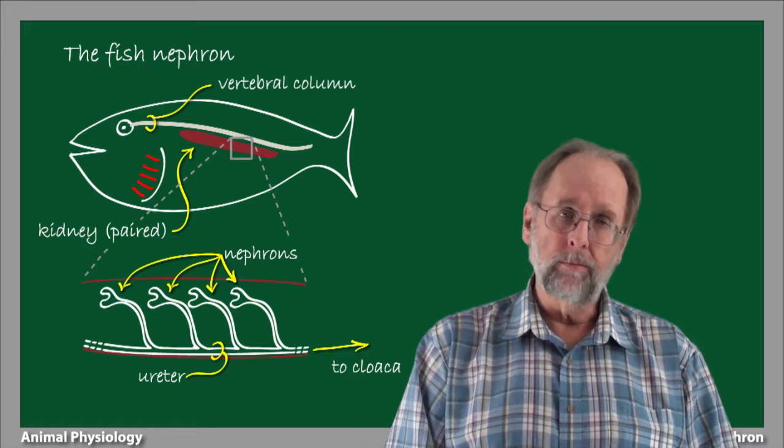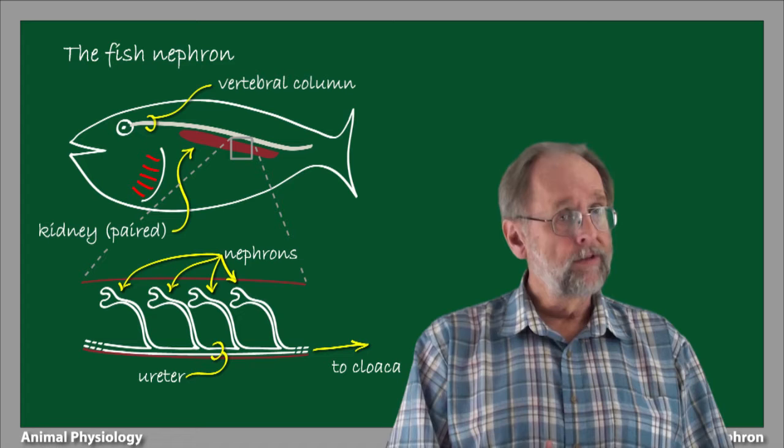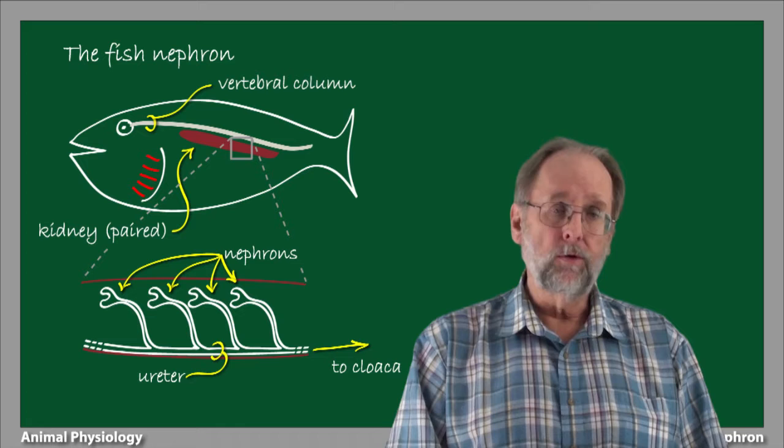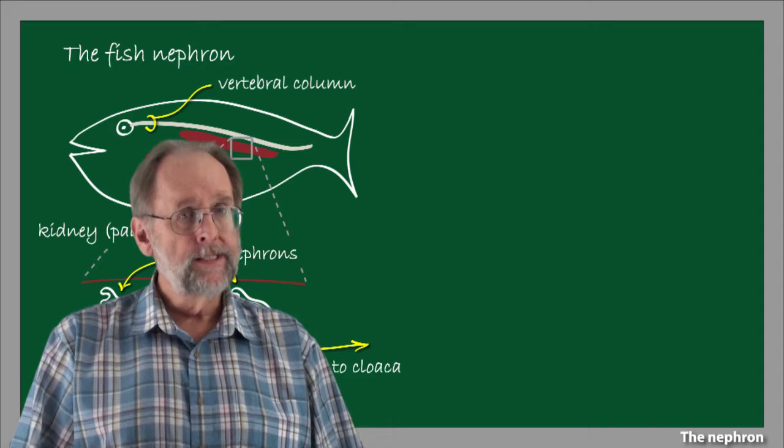There's one important feature of the nephron that's important to understand before we get into its more detailed structure and function, namely that the inside of the tubular nephron is a space that's actually contiguous with the outside environment. The array of nephrons in a kidney, therefore, is a very highly folded interface between the environment and the body fluids.